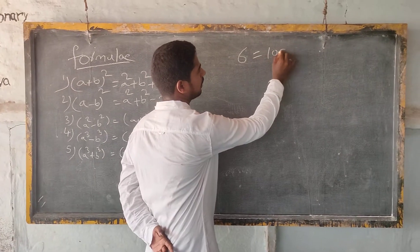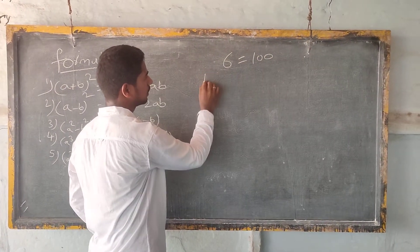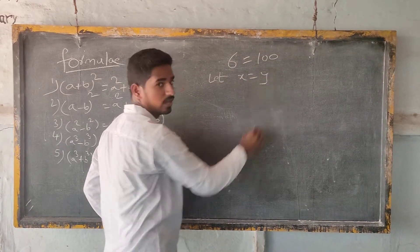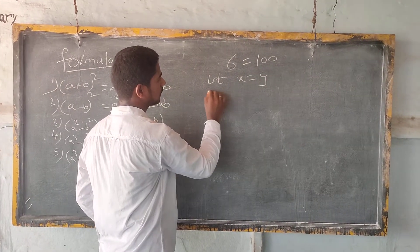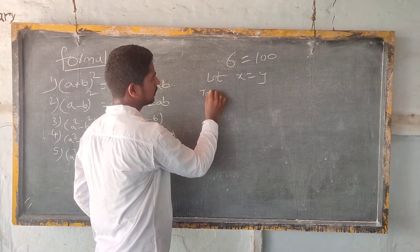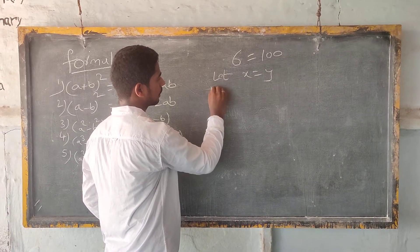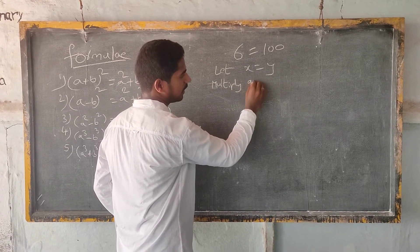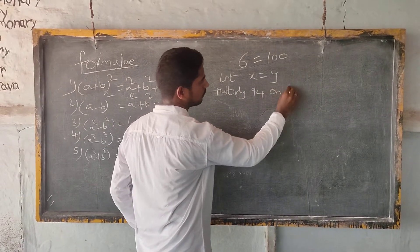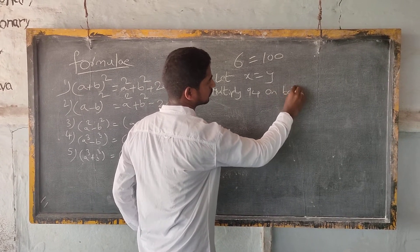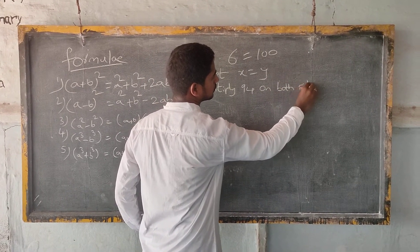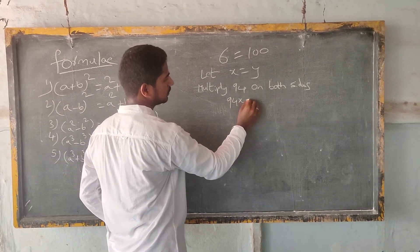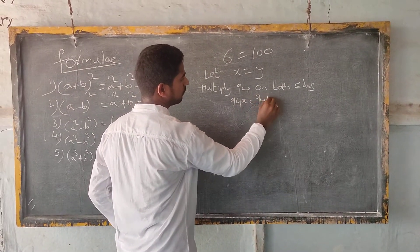Six is equal to hundred. Let x is equal to y. Multiply ninety-four on both sides. Ninety-four x is equal to ninety-four y.